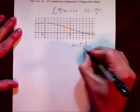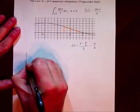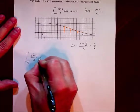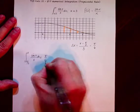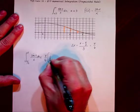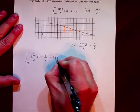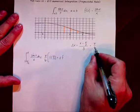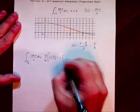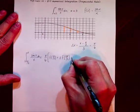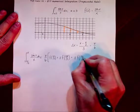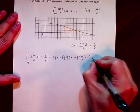We know delta x is (b minus a)/n, so it's (π/2)/3, which is π/6. To estimate the integral using the trapezoidal rule, we need delta x times one-half, then f(π/2), plus 2f(π/2 + π/6). Now, π/2 is 3π/6, so adding π/6 gives 4π/6, which is 2π/3. Adding another π/6 gives f(5π/6), and finally f(π).